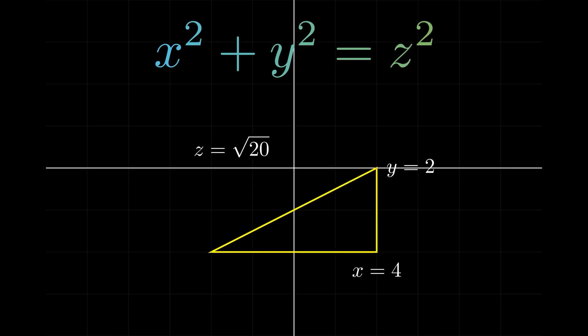Let's start with something simple. This equation, x squared plus y squared equals z squared, is the Pythagorean theorem, describing the relationship between the sides of a right triangle.